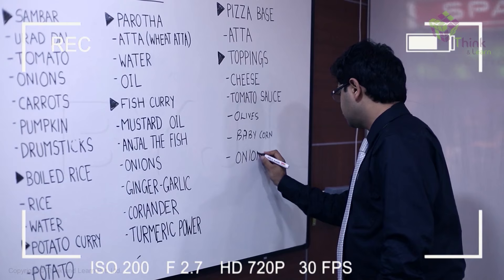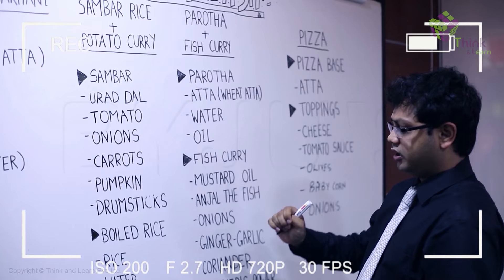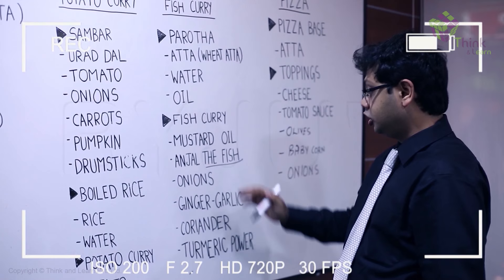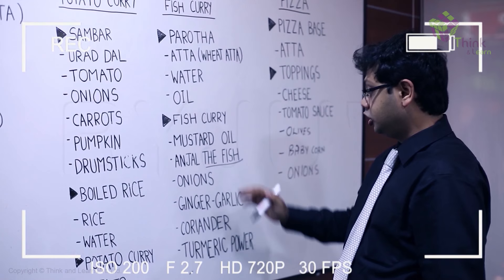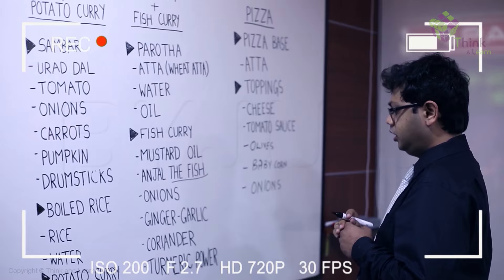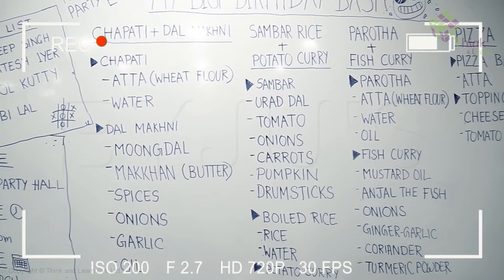We are making sambar rice, for which we will definitely require rice and water. For the fish curry we will definitely require fish, onions, ginger, garlic, coriander, and turmeric powder. Let me also add ghee — they will probably want to eat it with ghee. Now, who would have ever thought that chapati and the pizza base would have the same ingredients?